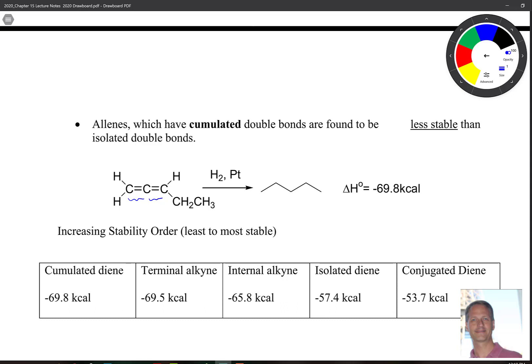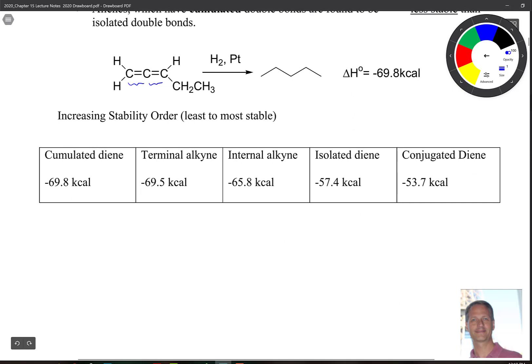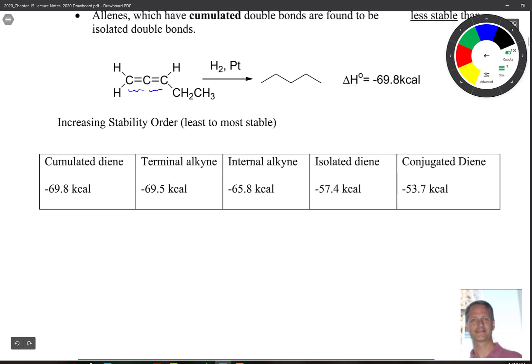So let's take a look here and put this all together. So when we put all of that together, we end up getting the following kind of pattern. So you have cumulated dienes being the least stable. So down here we have least stable, terminal alkyne, internal alkynes. We're going to throw those things in there just for comparison. And then you have your isolated diene and conjugated diene on the far right hand side. So this would be the most stable. So sometimes in books they'll give you a bunch of alkenes and maybe some alkynes and they'll have you rank them. So you can consult our notes in this little table to help you make that judgment.